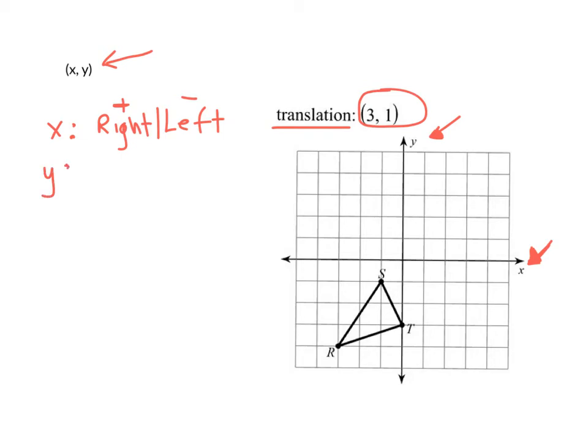Similarly, for the second number, the second number represents Y. And the Y axis, if you notice in our picture, goes up and down. And so that's what that number would represent. If the number in the Y position or the second number is positive, you're going to move the point up. If it's negative, you're going to move it down.